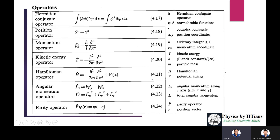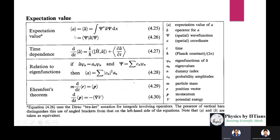The expectation value (average value) of an operator: <A> equals the integral of psi-star A-hat psi dx, or in bracket (Dirac) notation: <psi | A-hat | psi>.